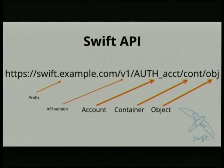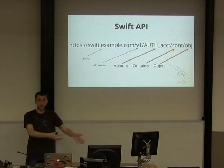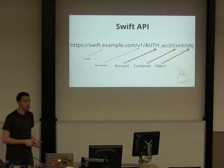That's exposed to the user via the API with a simple URL. The URL has three major components after the domain: the API version (which has always been version one — we've had a very stable, over four-year-old API), the account, the container, and the object. The account is the top level, the container is next, and then the object. Comparing this to something functionally similar like Amazon S3: Amazon's buckets correspond to Swift containers and Amazon's keys correspond to Swift objects. From the client's perspective, it's just: put this object, get this object back.